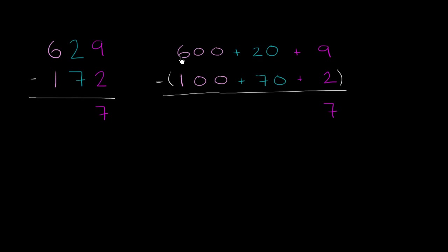So why don't we take 100 from the 600, so that becomes 500, and give that 100 to the tens place. If we give that 100 to the tens place, what is 100 plus 20? It's going to be 120.